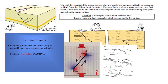Emergent faults are those that intersect the ground surface while active, creating a topographic step. In contrast, exhumed faults are inactive, exposed by erosion. These faults can be active or inactive, and understanding their formation helps in mapping Earth's surface and predicting geological activity.